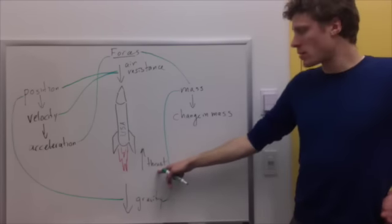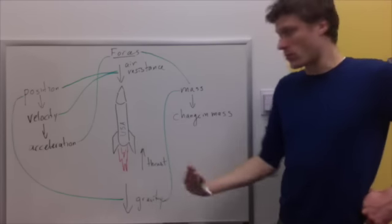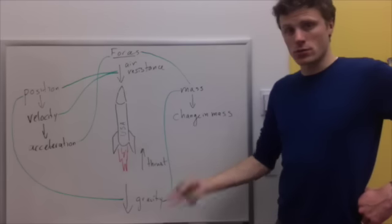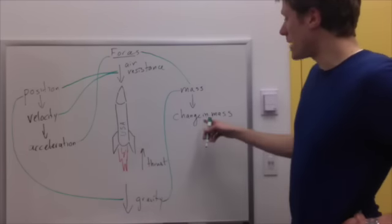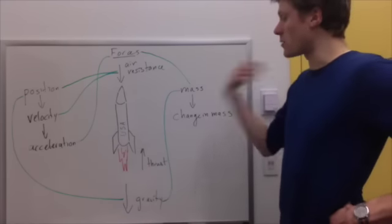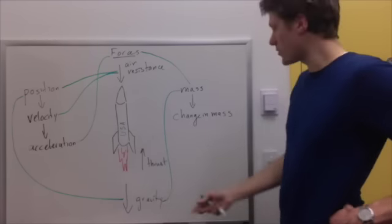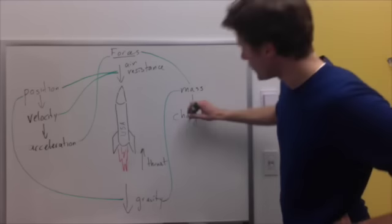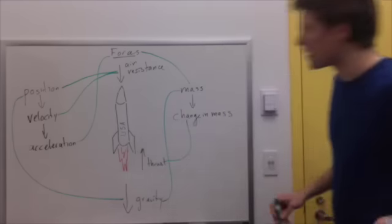Finally, the thrust of the rocket, well that comes from expelling fuel and igniting it. So that's the change in mass. When we get rid of the fuel and ignite it and cause thrust, we're changing the mass of the rocket ship. So these two things connect right here.